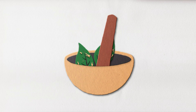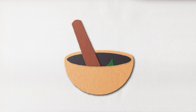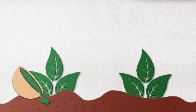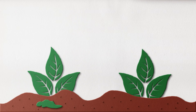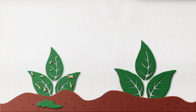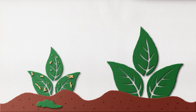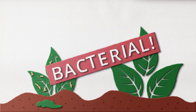Ivanovski decided to go a step further and expand on Mayer's experiments by crushing up diseased leaves and placing them in healthy plant soil. He discovered that these plants would also become infected, but that healthy plants simply growing next to diseased ones would not. Still, he thought the disease must be bacterial, so he designed an experiment to prove this.